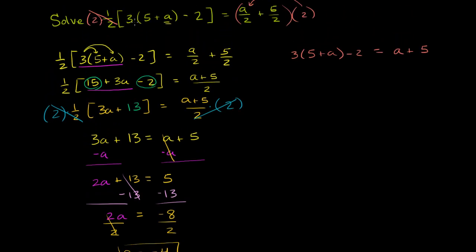Let's actually verify that this works. If a is equal to negative 4, we have the expression 1 half times 3 times 5 plus negative 4 minus 2. It needs to be equal to negative 4 over 2 plus 5 over 2. Every place that I had an a, I replaced it with negative 4. 5 plus negative 4 simplifies to 1. So then we have 3 times 1 minus 2. So you have 1 half times 1. The left hand side simplifies to 1 half. The right hand side, negative 4 halves plus 5 halves is the same thing as negative 4 plus 5 over 2, which is the same thing as 1 half. So it all works out.